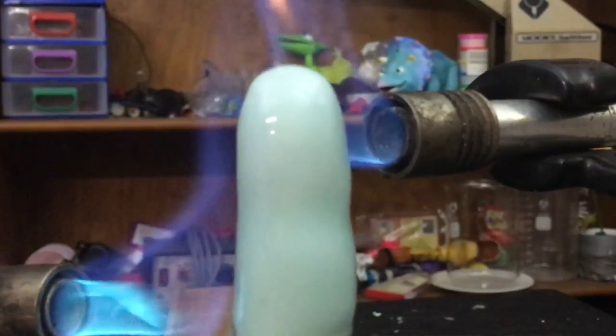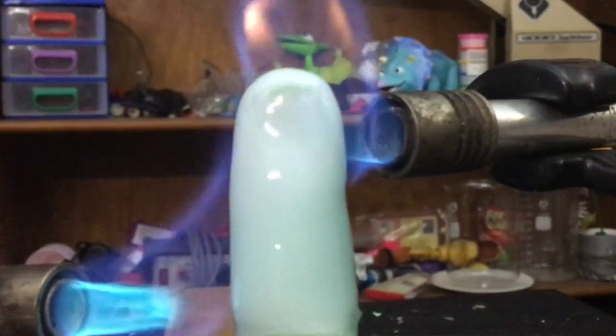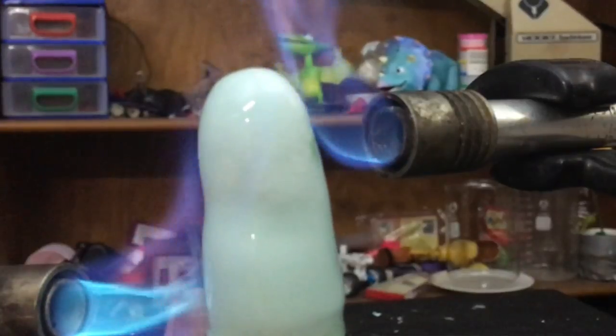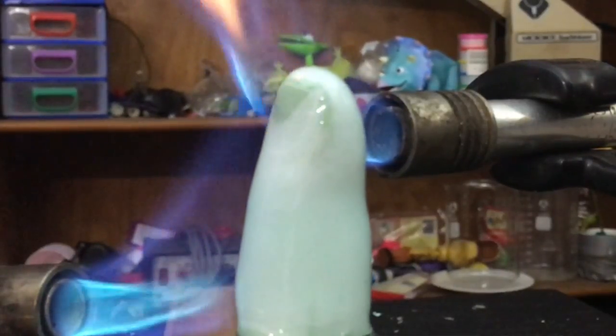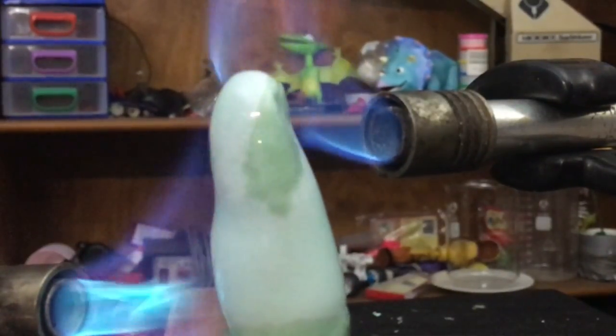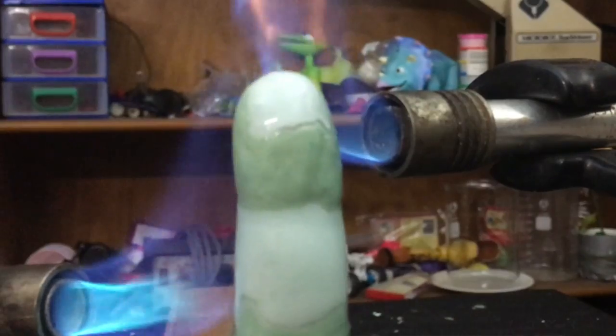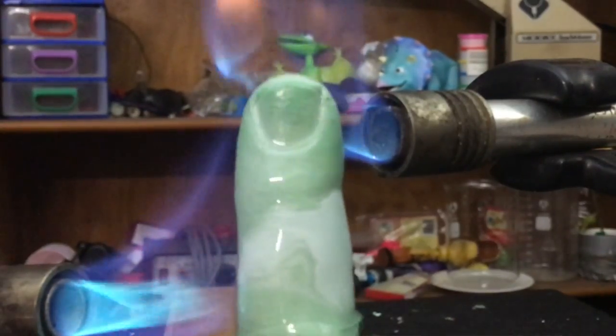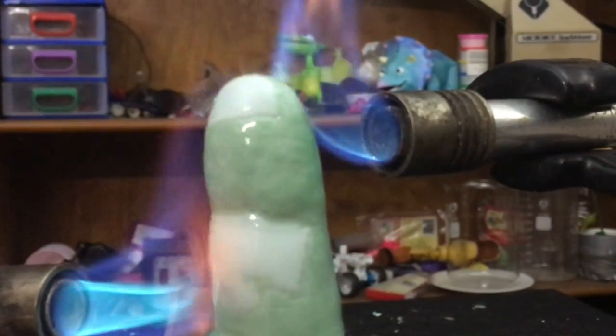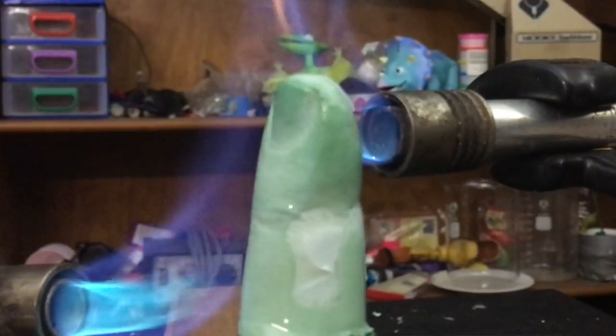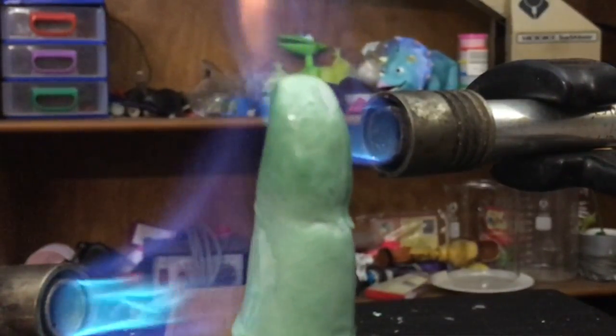And start melting the wax off my wax finger. Look at the wax drip off. It's a physical change. Drip, drip, drip. Doesn't it melt the plaster of Paris? No, the plaster of Paris doesn't melt easy. As you can see, my finger's coming out. My finger is being revealed. Cool, nice looking finger.